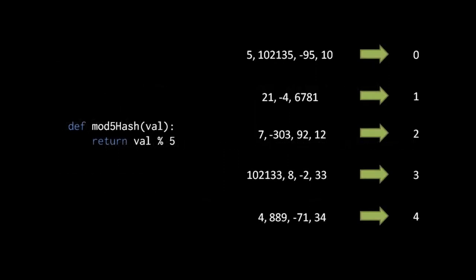Perhaps the simplest hash function is one that returns the modulus of the input. Our mod5_hash function takes an input value and returns simply its value modulo 5. So inputs like 5, 100, 2135, -95, and 10 all produce the hash 0; inputs like 21, -4, 6781 produce hash 1; 7, -303, 92, and 12 produce hash 2, and so forth — only 5 different possible outputs: 0, 1, 2, 3, and 4. A simple modulus is generally a very appropriate hash function for a hash table because, given a set of random inputs, the distribution of outputs tends to be uniform. Each output would occur on average 20% of the time, assuming totally random input.